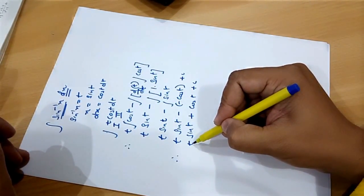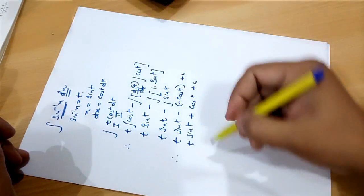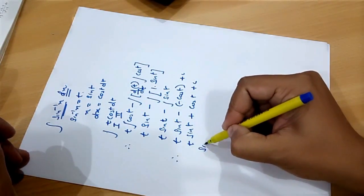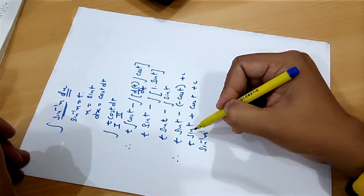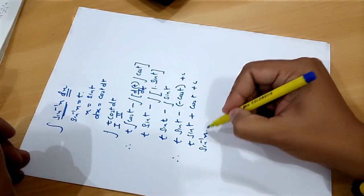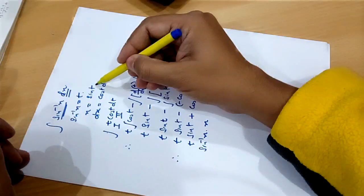Now, we are substituting the values. In place of t, we will put sin inverse of x. In place of sin t, we will put x from here.